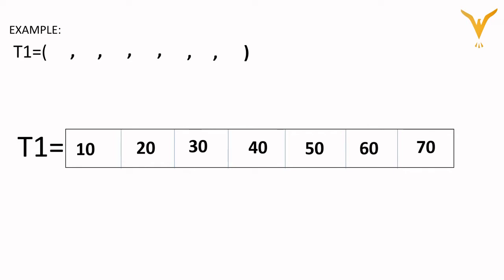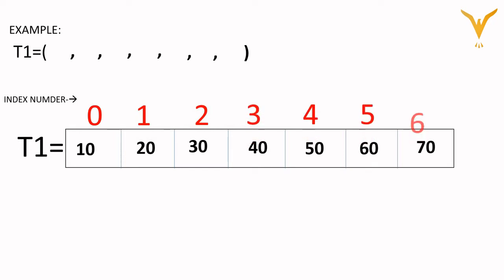To access these tuple elements we require the index number. The index number always starts with 0. So the index number for 10 is 0, for 20 is 1, then 2, 3, 4, 5 and so on. These are the index numbers and to fetch a particular value from the tuple we require the index number.